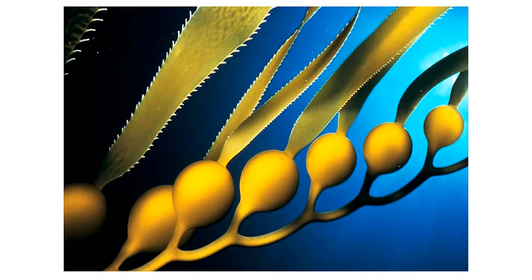Next we have the stipe. The stipe is the part that holds all of the parts together on kelp. It's what we would probably consider a stem on plants, but again, it's not a stem — we call it a stipe.